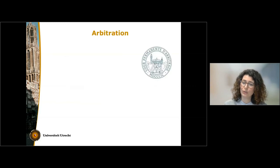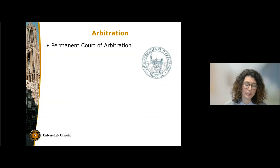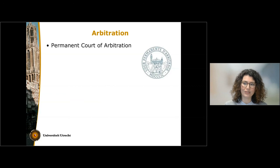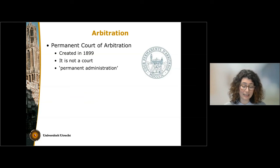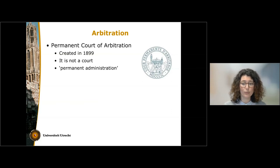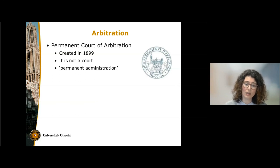To conclude, what is arbitration? Arbitration is a specific procedure that can take place, for instance, at the Permanent Court of Arbitration — which is actually not a court but a permanent administrative structure created in 1899, also located in The Hague at the Peace Palace. Within this permanent structure, states can start ad hoc arbitrations.